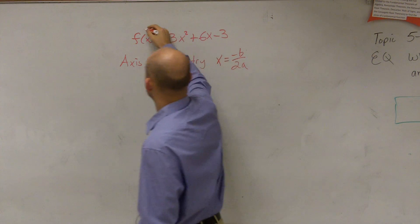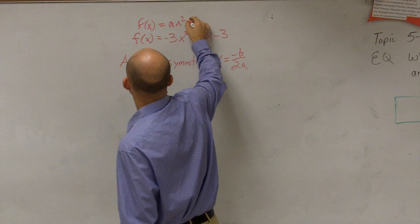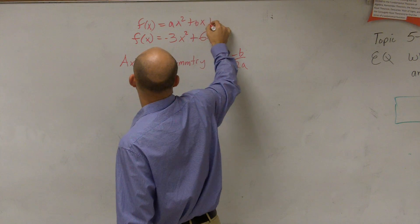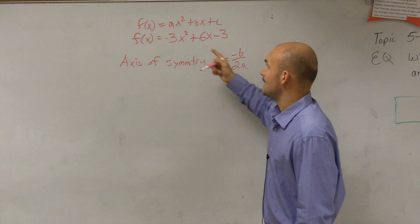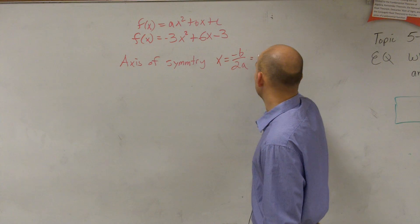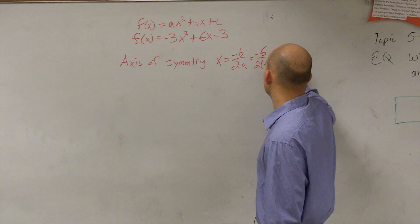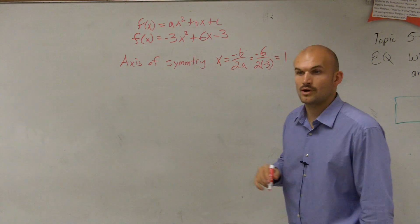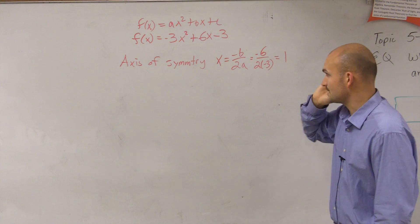So for this problem, remember this can be rewritten as a quadratic function in the form of ax squared plus bx plus c. We look at my b, which in this case is a 6, and a, which is -3. So therefore, I have opposite of 6 divided by 2 times negative 3, which ends up giving me a positive 1. Negative 6 divided by negative 6 equals positive 1.